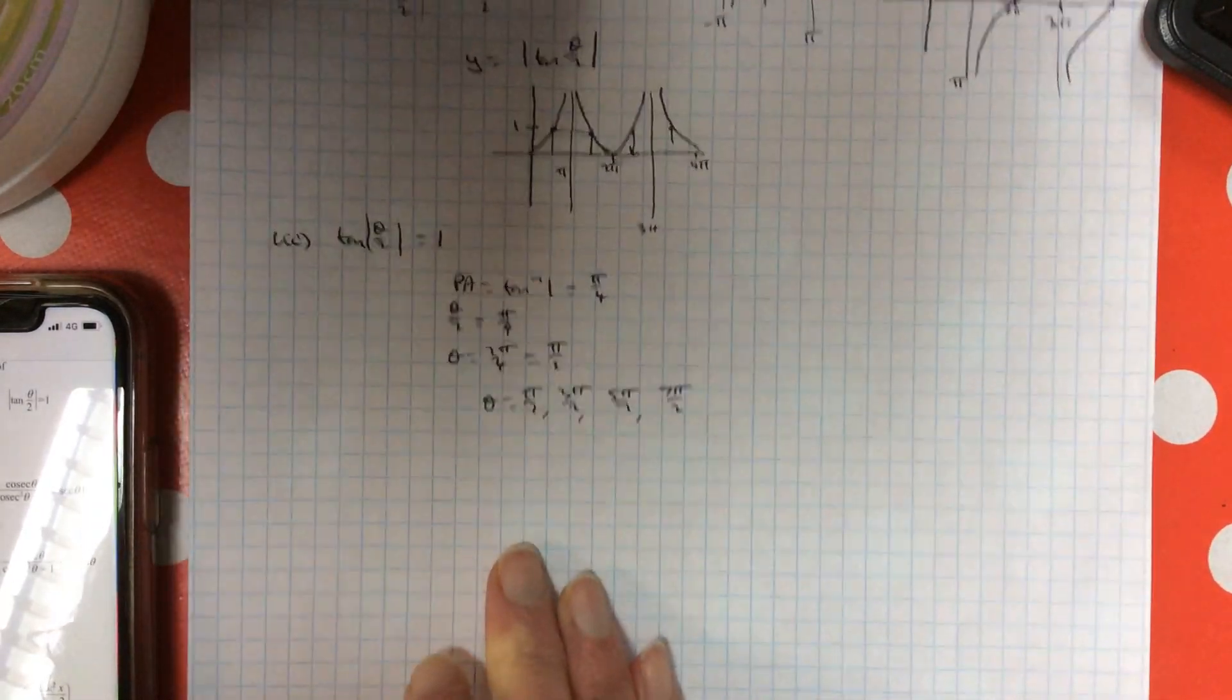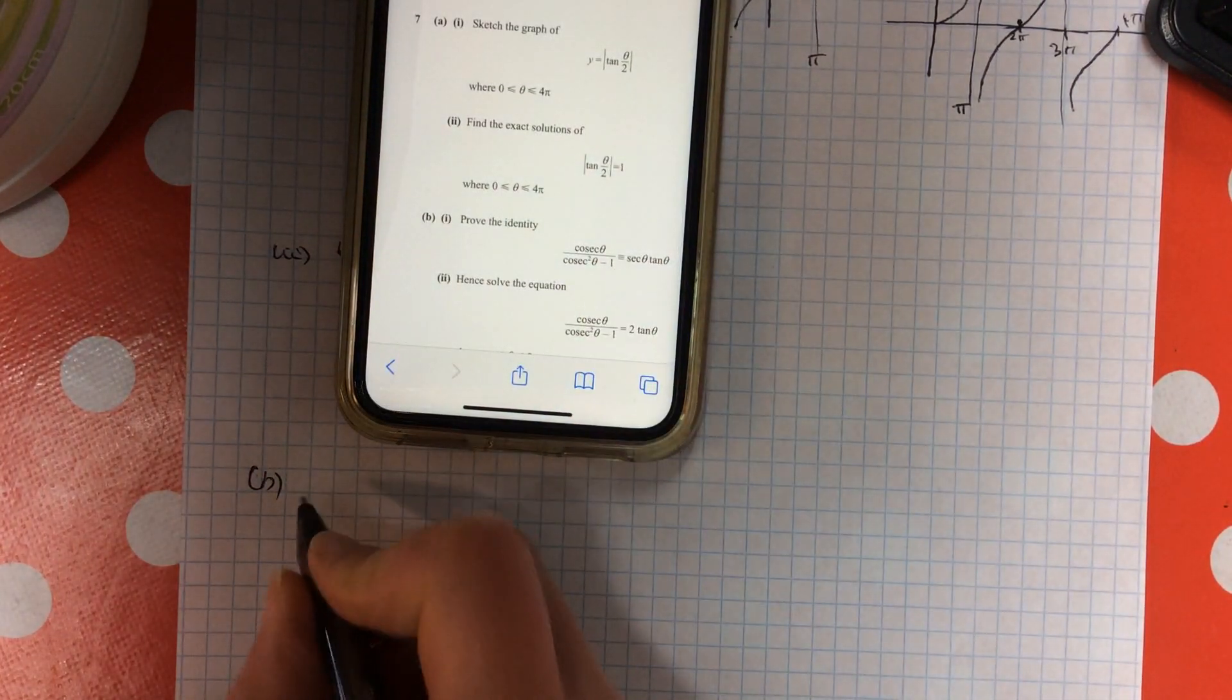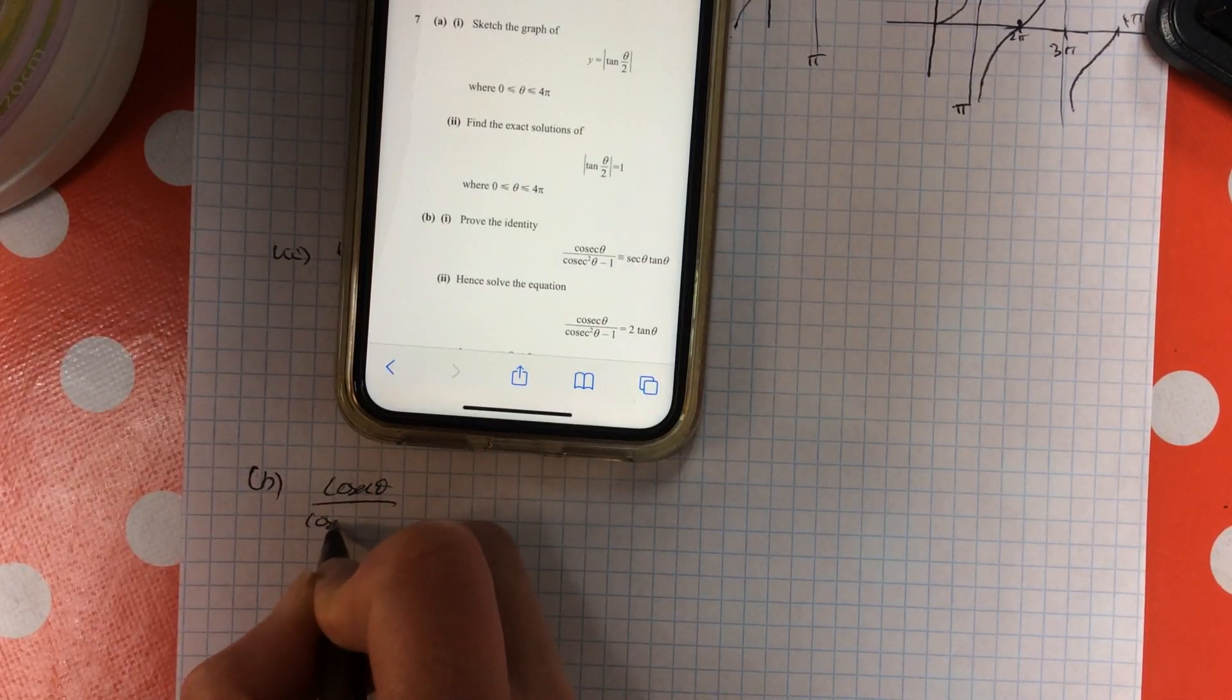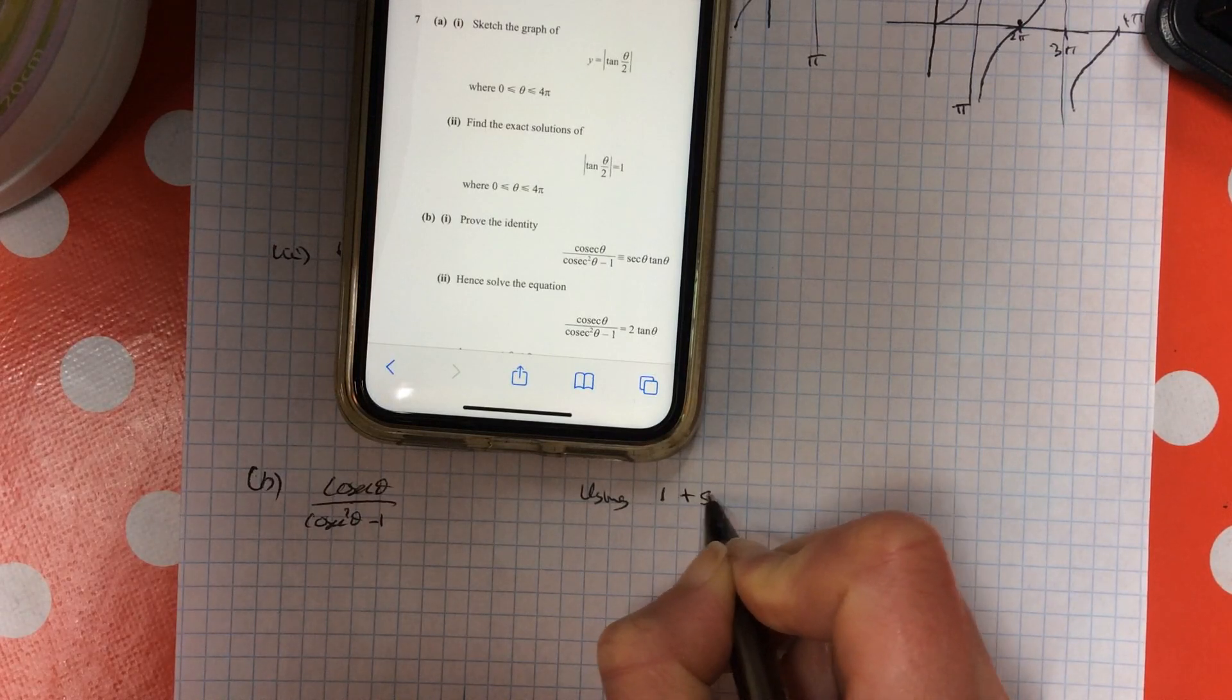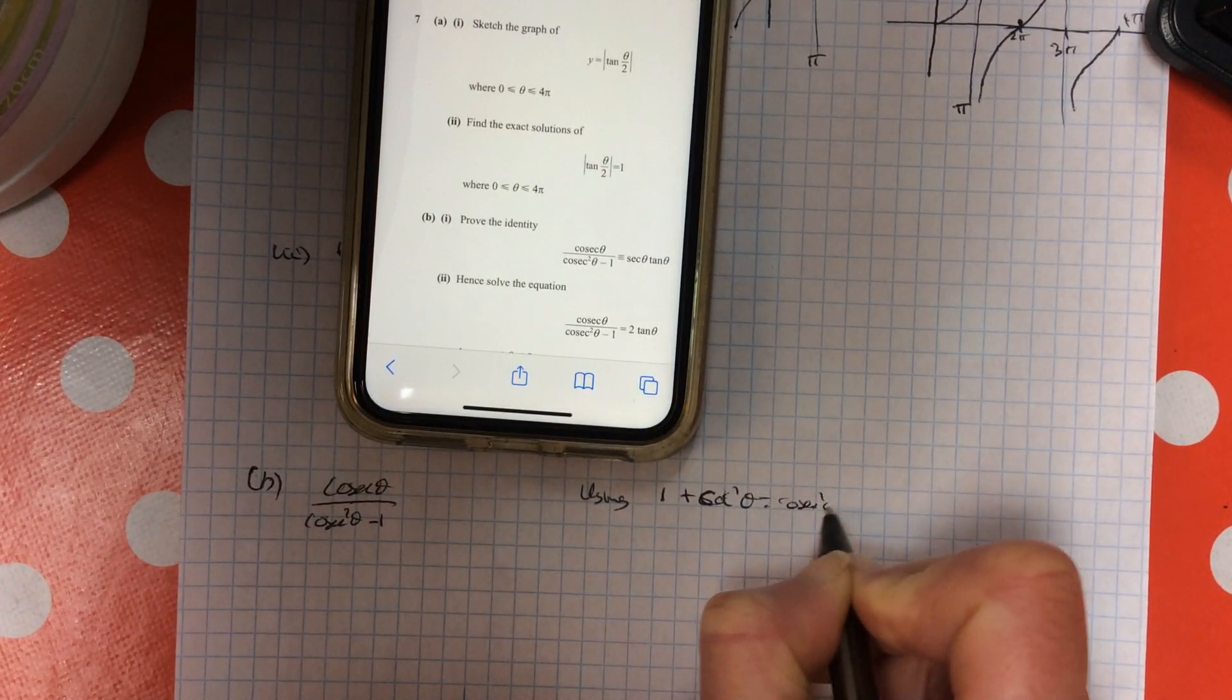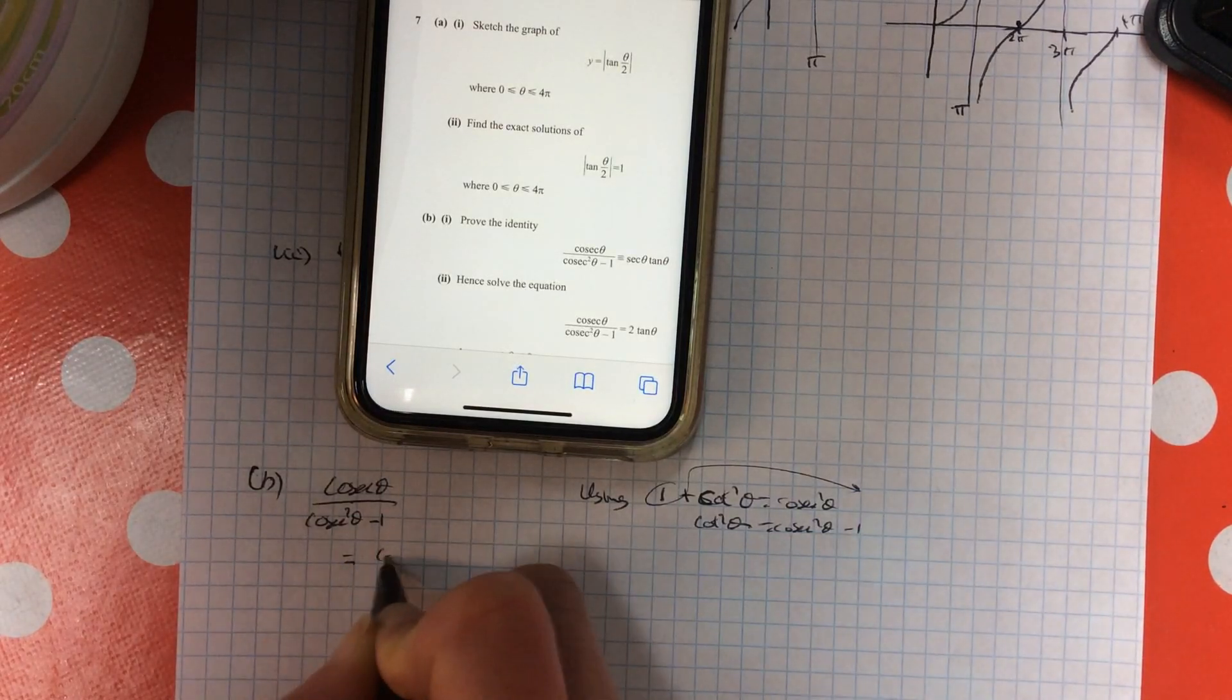So part B of that question is saying prove the identity down beneath there. So it's cosec theta over cosec squared minus 1. The first thing that I'm thinking of there is I'm going to be using 1 plus cot squared equals cosec squared. So cosec squared minus 1 is the same as cot squared.